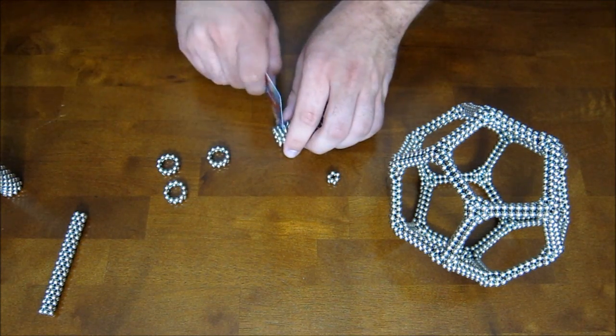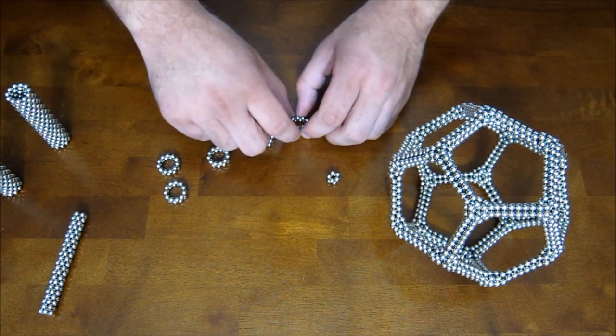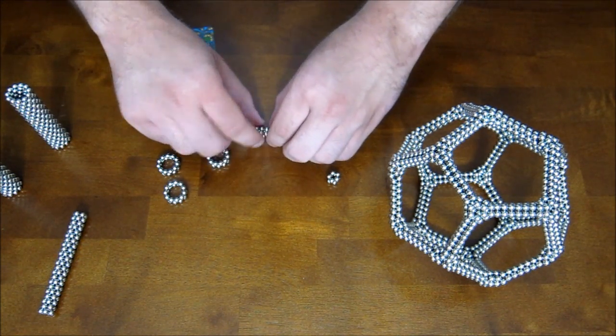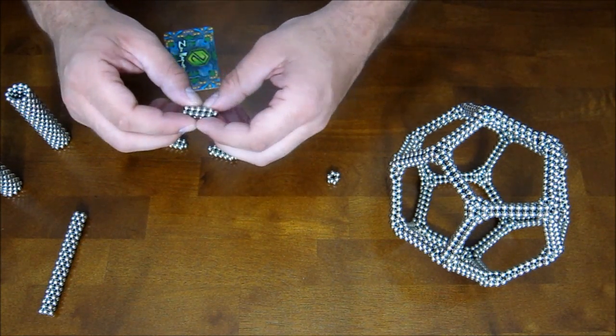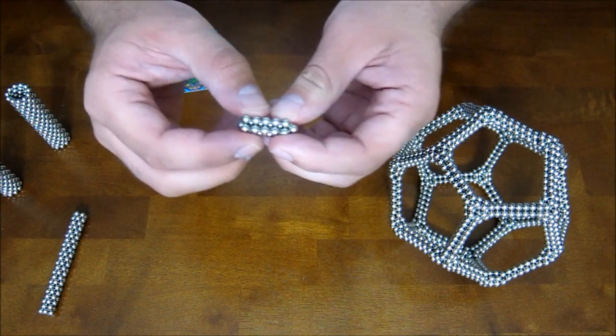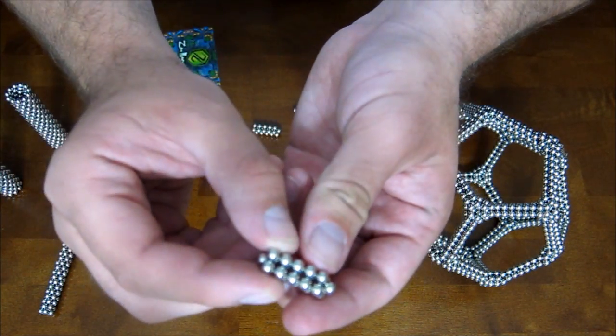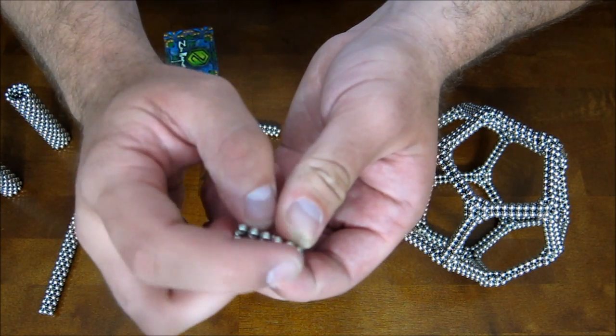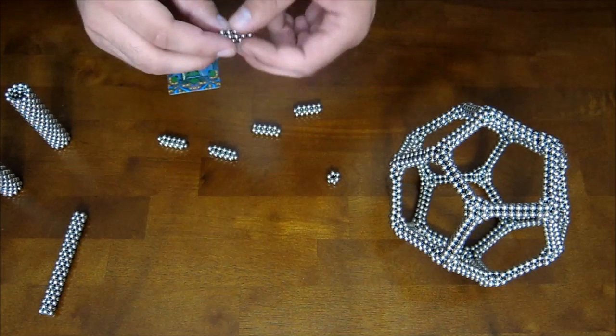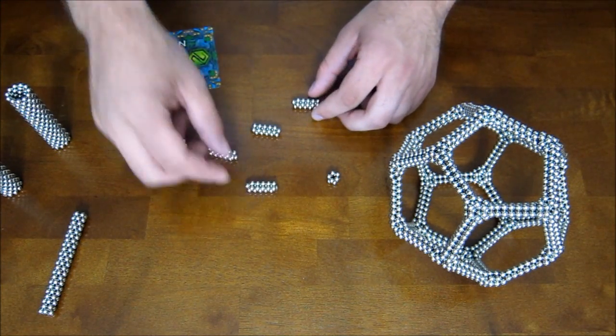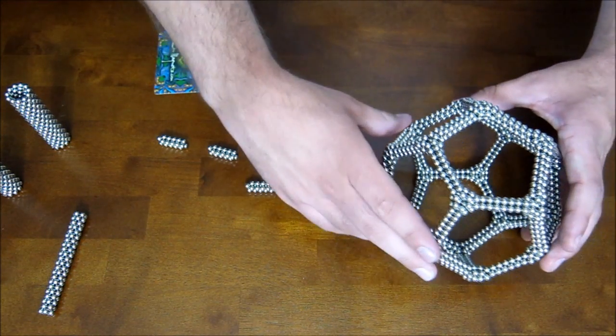So you take 5 of these off and you pinch them together. Now one thing you'll notice though, as opposed to regular long straight pieces which are kind of a little bit more symmetrical, this one is not. See it ends in 2 magnets on this side and it ends in 1 magnet on that side. So you want to make sure you keep a note of that and keep the polarity straight so they don't get flipped over.